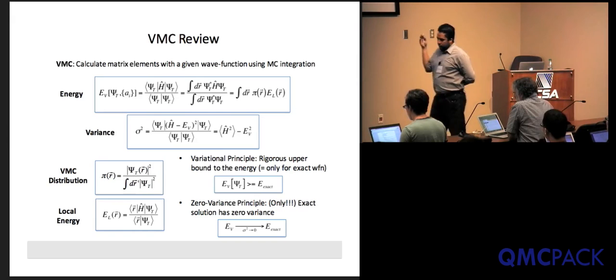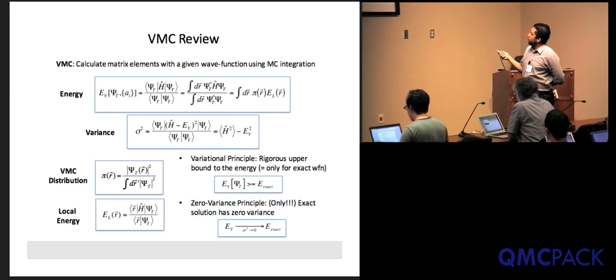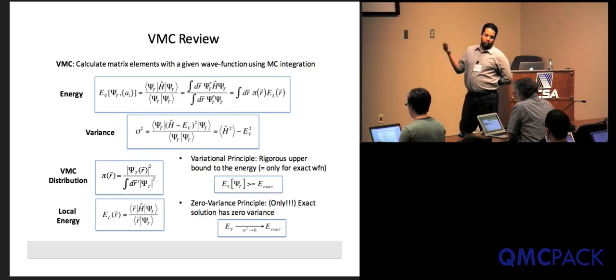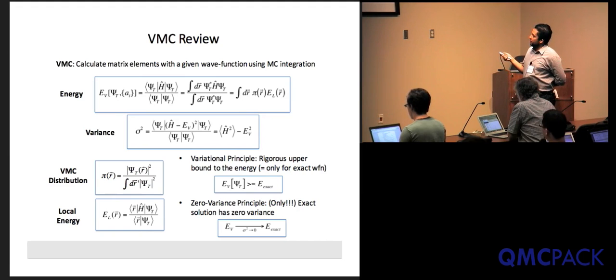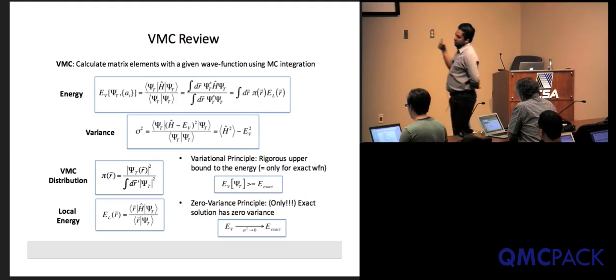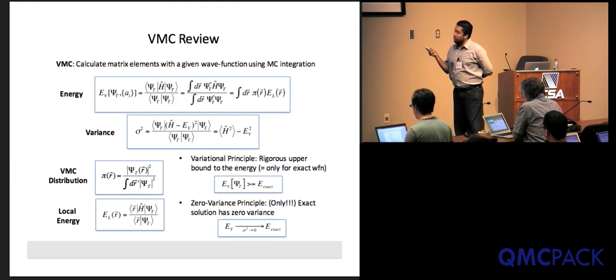David already talked about the statistical noise and how to measure it, so I won't say much about that. Any calculation of this sort has an associated stochastic uncertainty which we can quantify in a well-defined way. For the optimization, we're going to use two pieces: the energy and the variance. The variance is defined as the matrix element of H minus E squared, and it's a measure of how good your trial wave function is. If you have a true eigenstate, the variance is exactly zero.